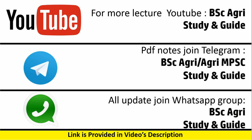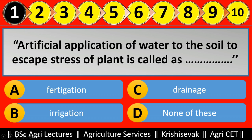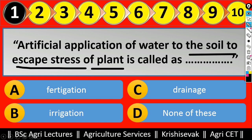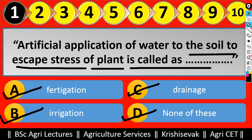Question number one: this is the most important and most common question in every examination. 'Artificial application of water to the soil to escape stress of plants is called as ______.' The options are: A) fertigation, B) irrigation, C) drainage, and D) none of these.